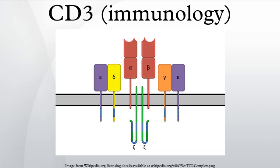In immunology, the CD3 T-cell co-receptor is a protein complex and is composed of four distinct chains. In mammals, the complex contains a CD3 gamma chain, a CD3 delta chain, and two CD3 epsilon chains.